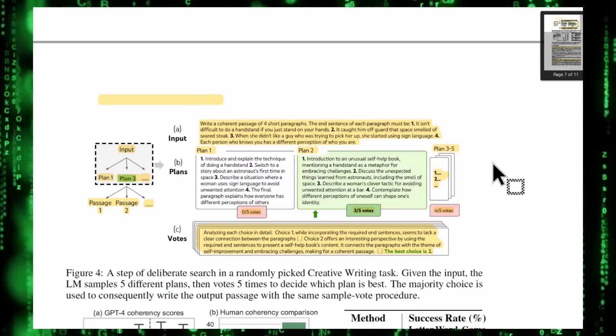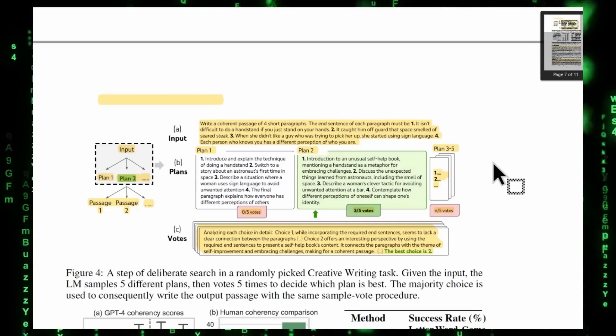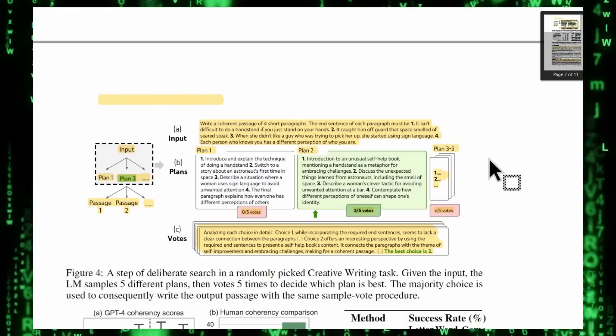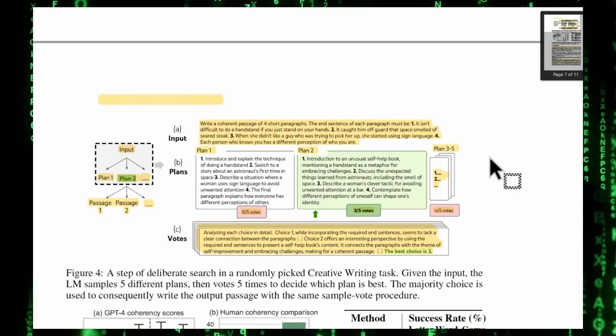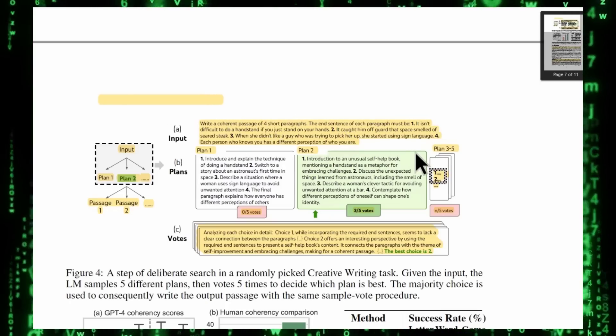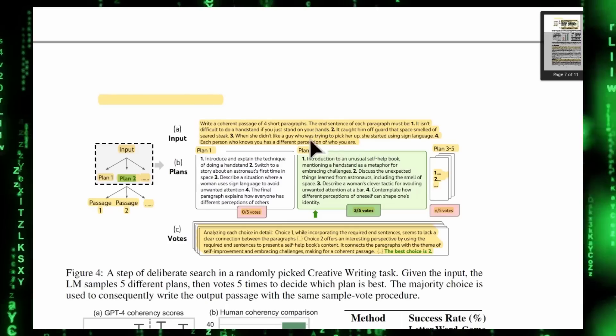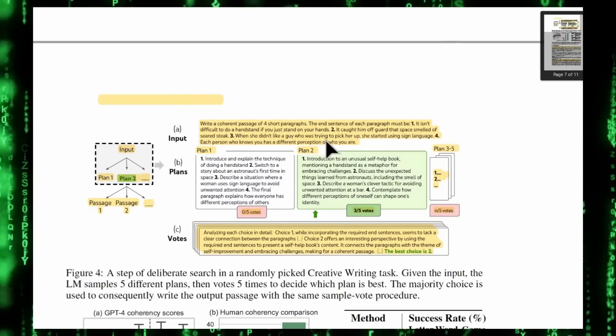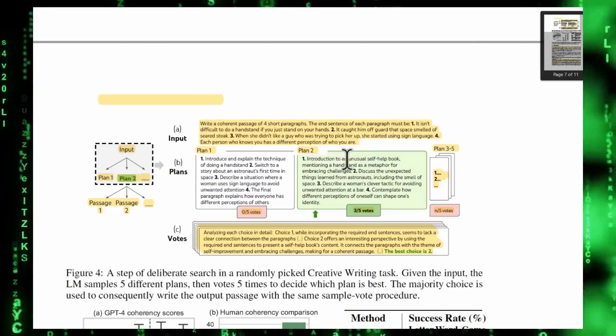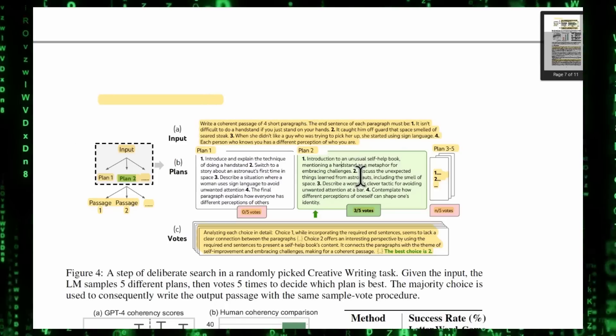2. It caught him off guard that space smelled of seared steak. 3. When she didn't like a guy who was trying to pick her up, she started using sign language. 4. Each person who knows you has a different perception of who you are. So this would be kind of difficult to put together in a coherent storyline. And so it generates several plans. And plan 2, it's able to wrap it up and present it in a self-help context. So the handstand is part of self-help, sort of as a metaphor for embracing challenges. And astronauts embracing challenges, including the smell of space.